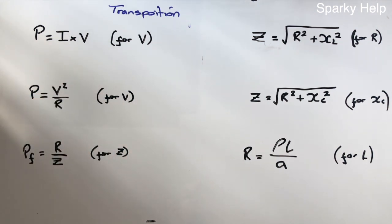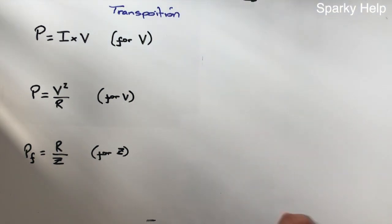We'll start with power equals I times V. Transposition is a useful skill to have because you either have to remember every formula and every possible combination, or if you can remember how to transpose a formula, you've only got to remember the one and then we can rearrange it once we've got that far.